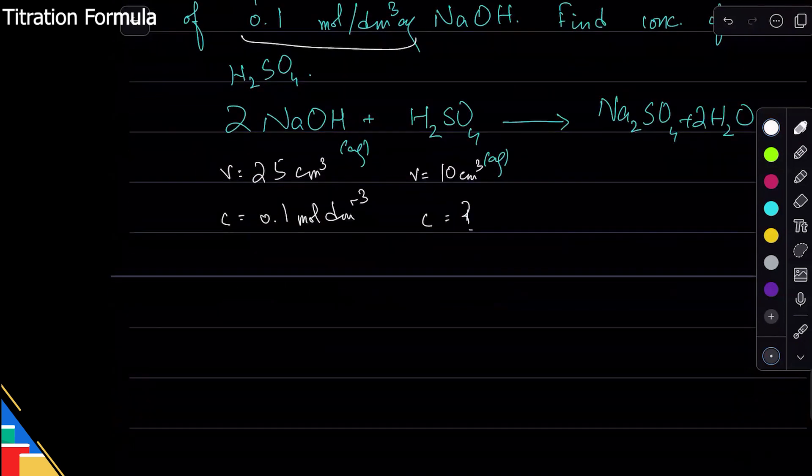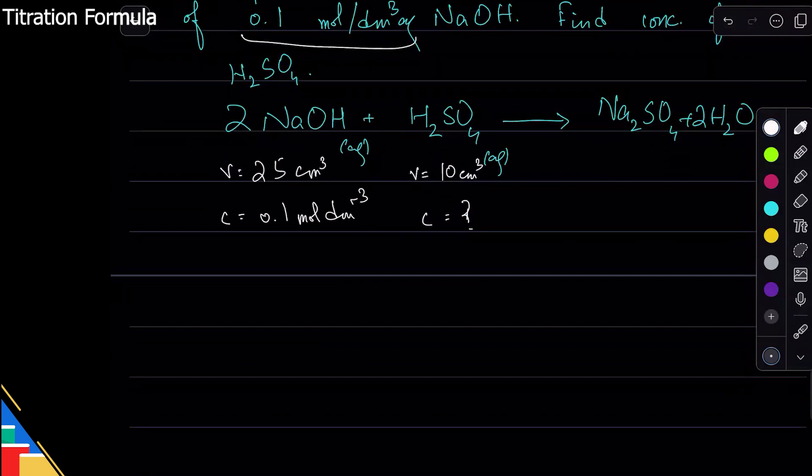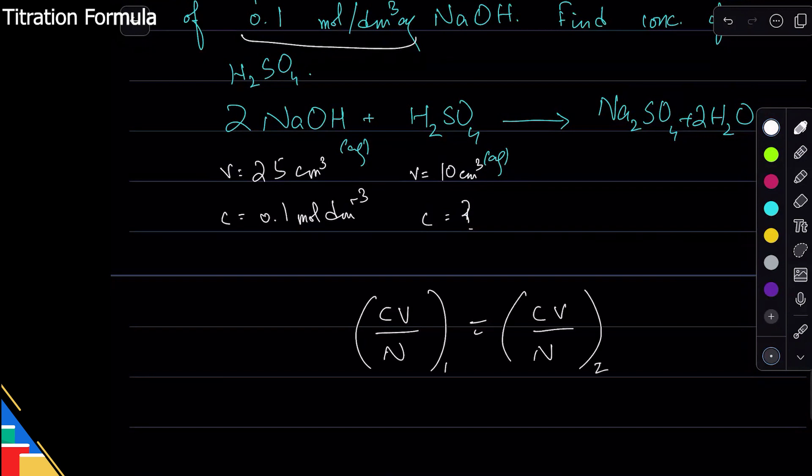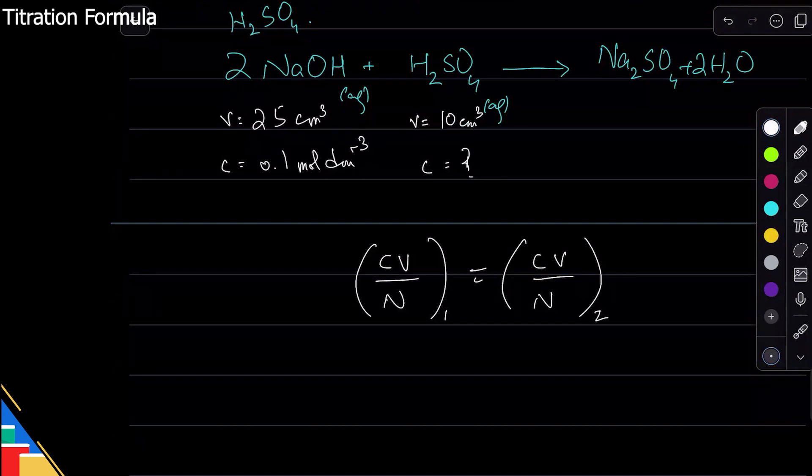Now I know that there are two solutions, so I can use the titration formula. CV over n of the first one - sodium hydroxide - is equal to CV over n of the second one, which in this case would be H2SO4. It doesn't matter whether you put H2SO4 as the first solution or the second solution.